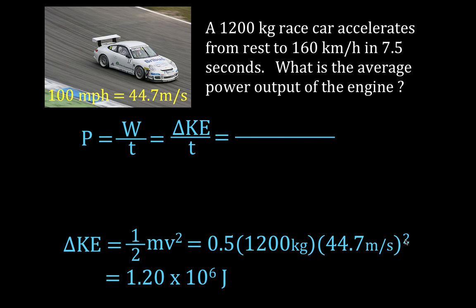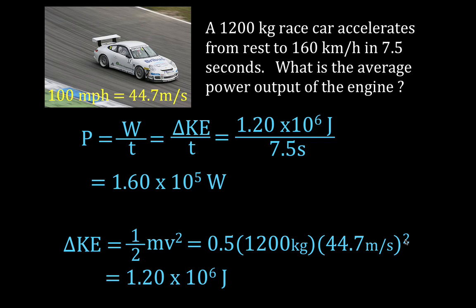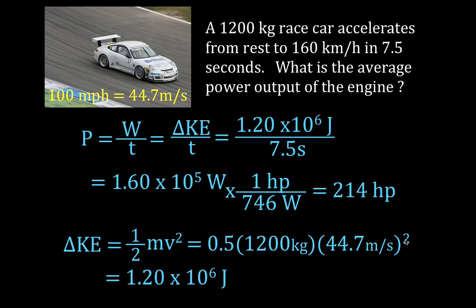The change in kinetic energy — 1.2×10⁶ joules — is the amount of work done on the car to get it from rest to 160 kilometers per hour in 7.5 seconds. We simply divide that by the time of 7.5 seconds and we get, once again, 1.6 times 10 to the 5 watts, which converts to 214 horsepower. That is way number two: power equals work divided by time, where work equals the change in energy.